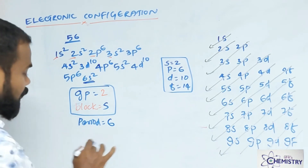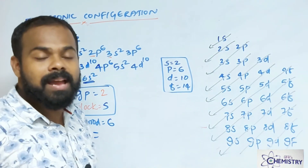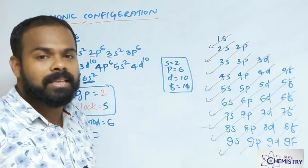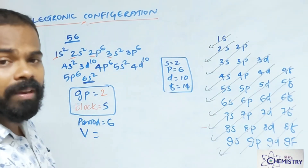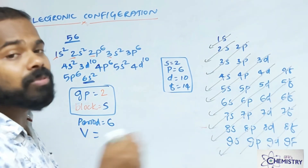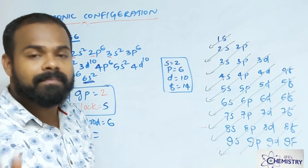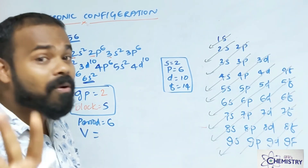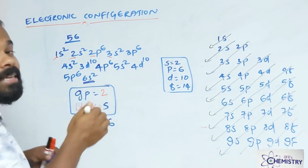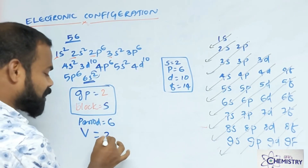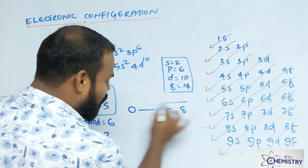Now counting valency — very important. Valency means the number of electrons required to obtain an octet, or the number of electrons removed to get an octet. We require eight electrons total. If the outermost shell has less than four electrons, we remove them. Valency does not exceed four — maximum valency of every element equals four. Here, the biggest principal quantum number is 6 with two electrons — that two is the valency, since two is below four.